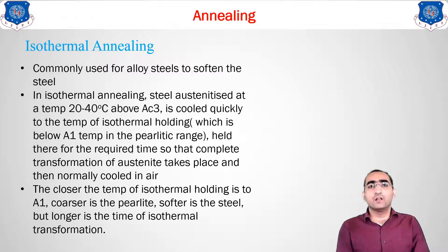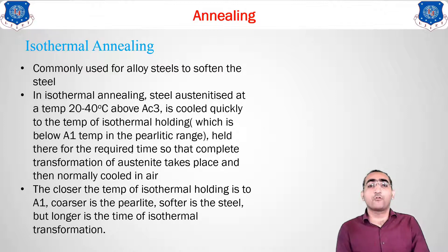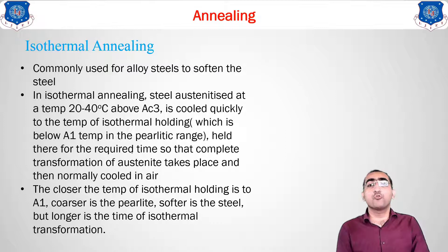Let us take an example: heat the material to about 950 degrees Celsius, that is above the A1 or AC3 line. After that, bring the material to the temperature of the bath which is kept around 700 degrees Celsius. The drastic change in temperature will be there, from 950 to 700 degrees Celsius. Keep that material for a very long time at that temperature, then go for cooling in air. What will happen? You will get pearlite — a coarser, very hard structure type of pearlite is obtained with the help of this isothermal annealing method.